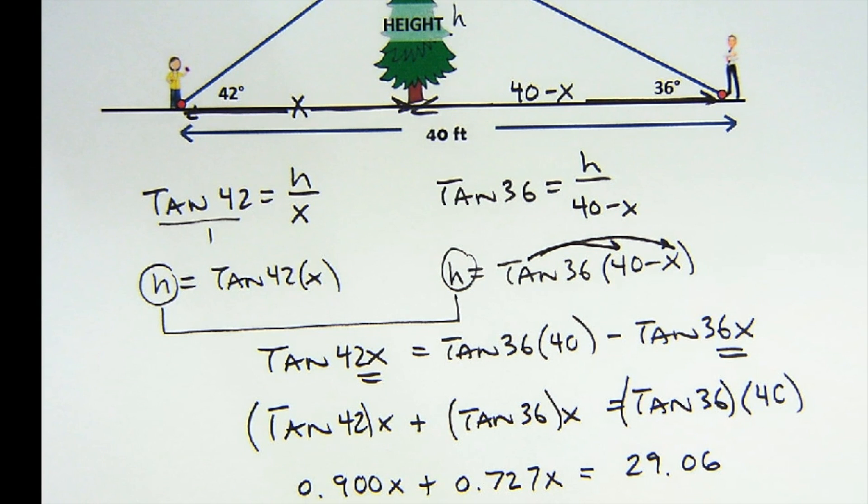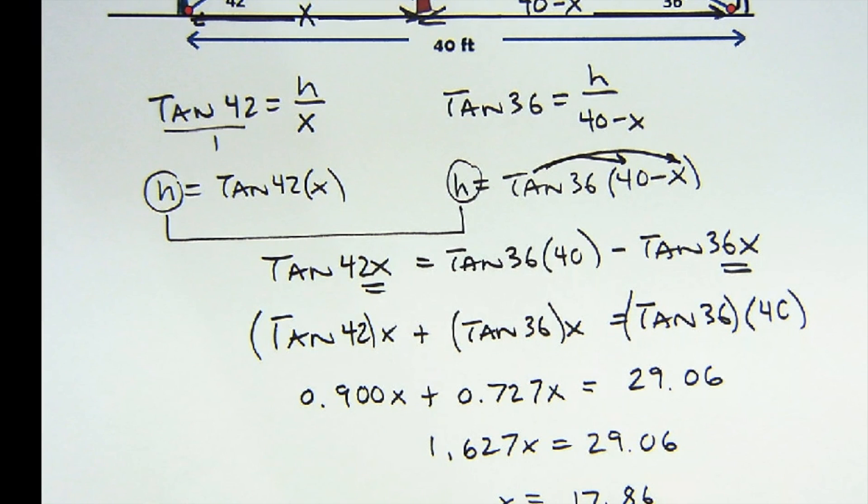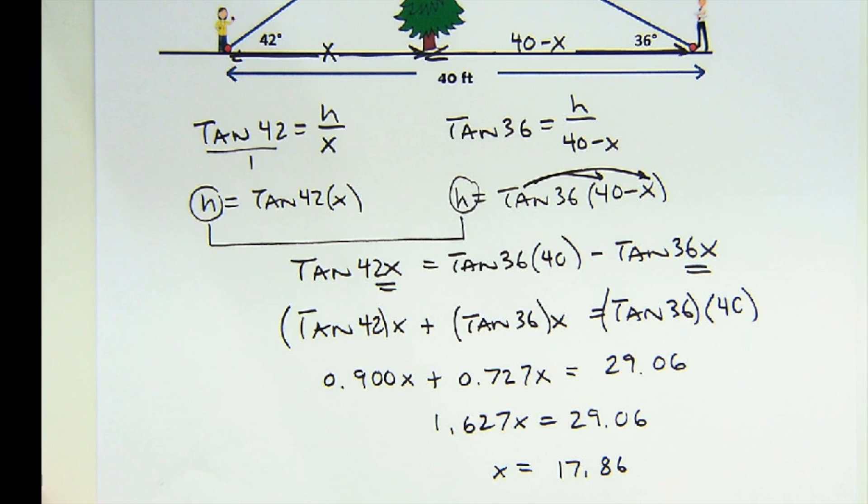So this value x is 17.86, and now I can solve for h, the height. This is what they wanted all along, was the height. By knowing x, I can go back to the original equation, which says the tangent of 42 is h over that distance x, which is 17.86.